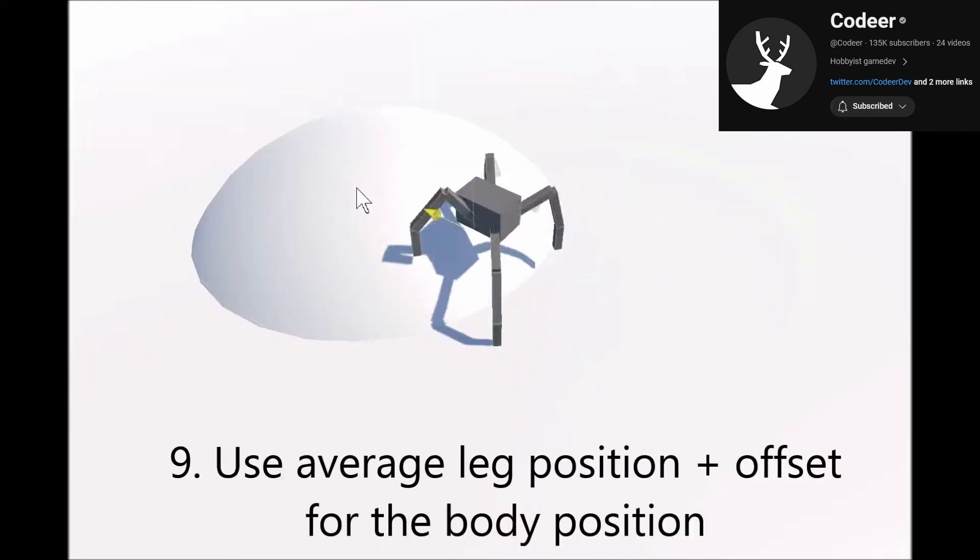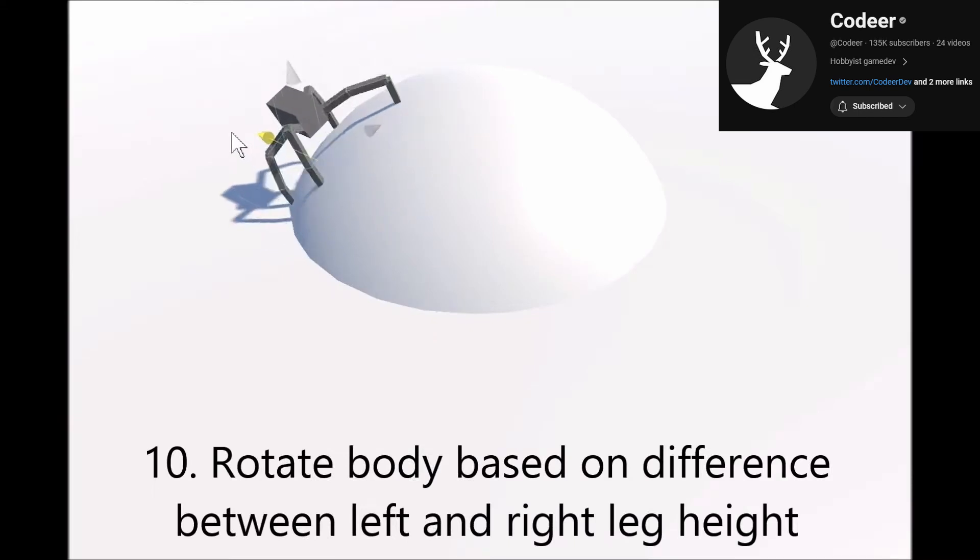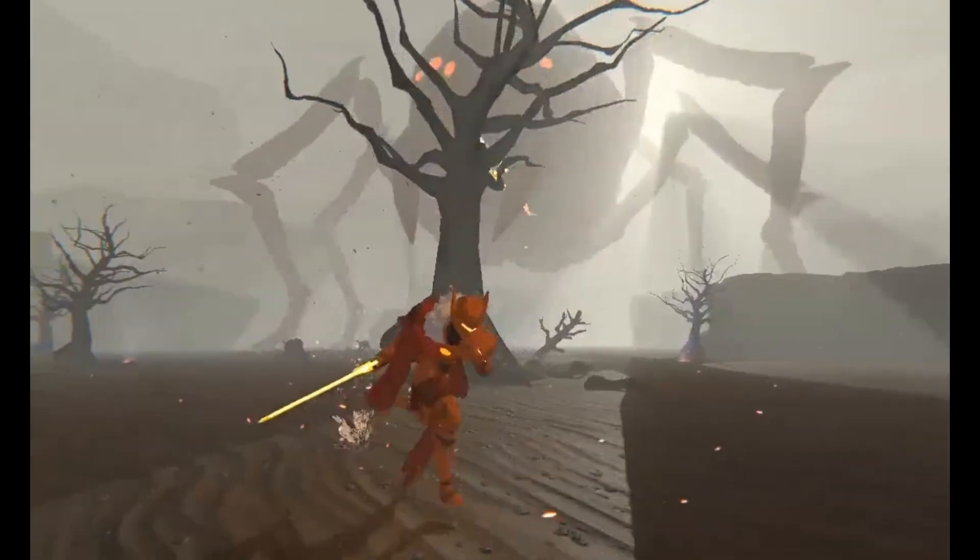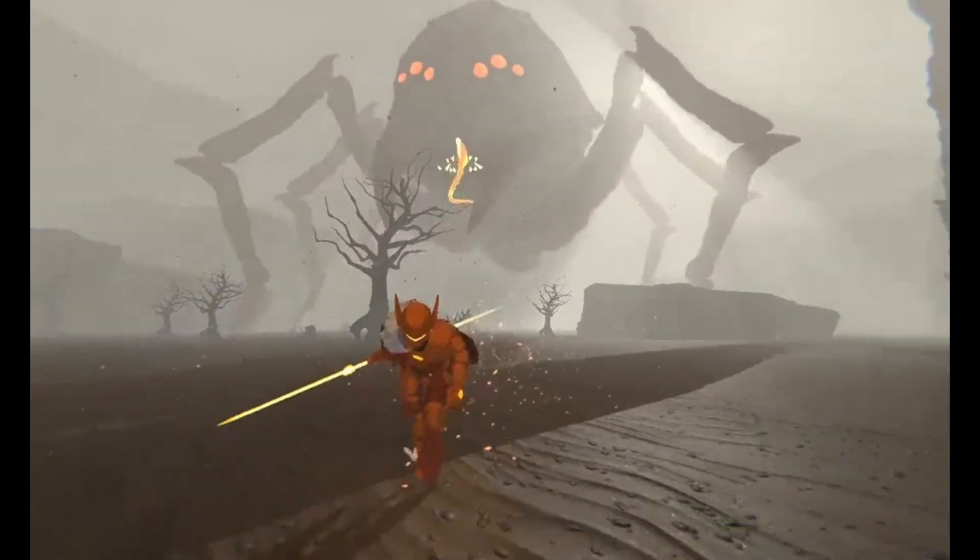To adjust the body, use the average leg position plus offset and then rotate the body based on the difference between the left and right leg height. While these are just the basic steps, you can add a lot of extra features and conditions where these rules change to make the walk more unique.